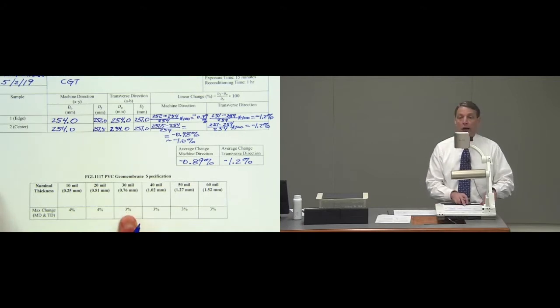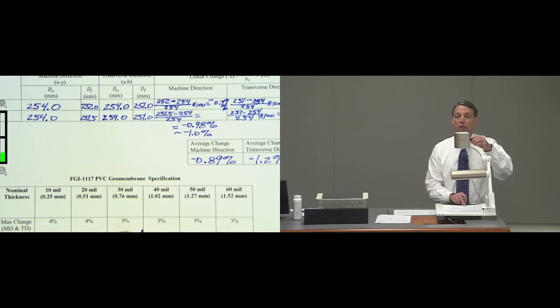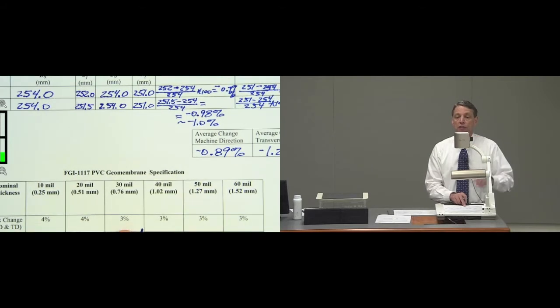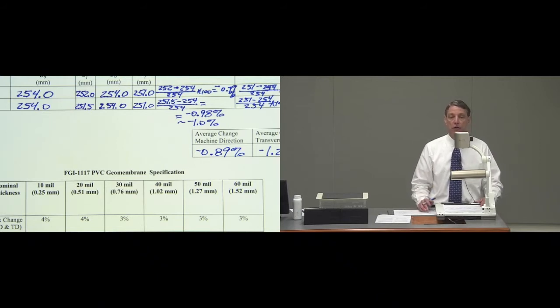30 mil, it can have a linear change of 3 percent. So this geomembrane passes the linear or dimensional stability test because both the machine direction and transverse direction change is less than 3 percent.